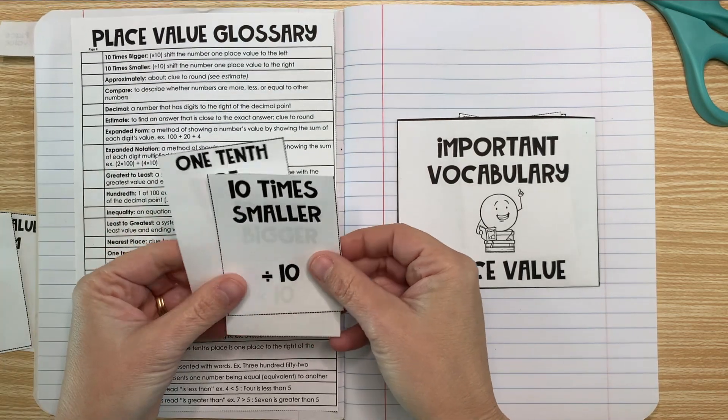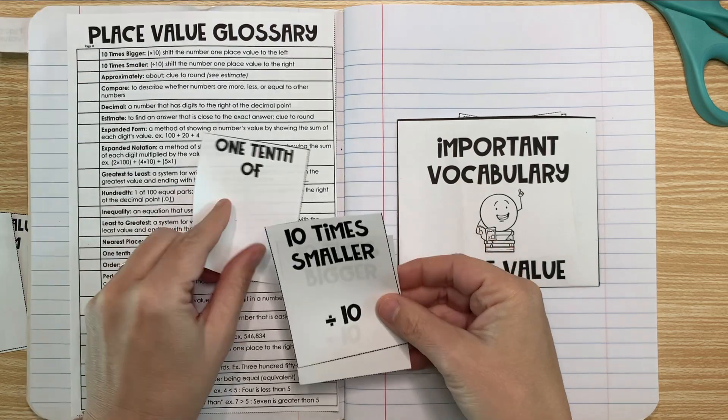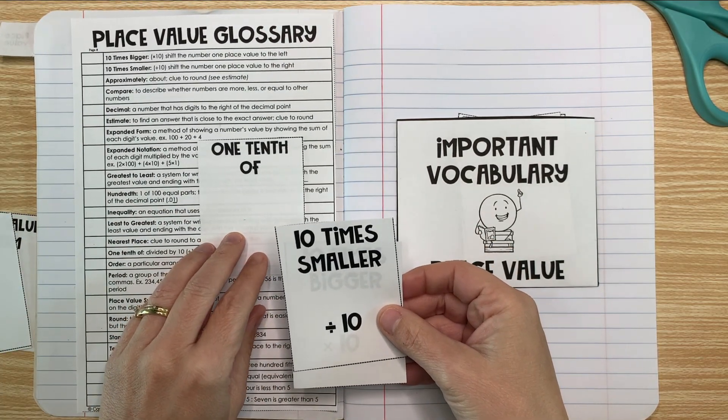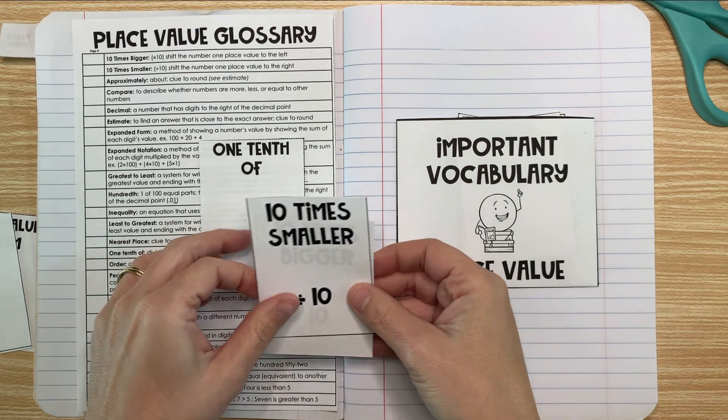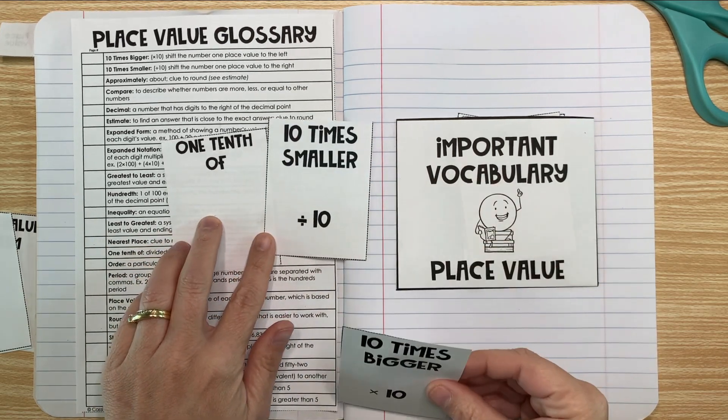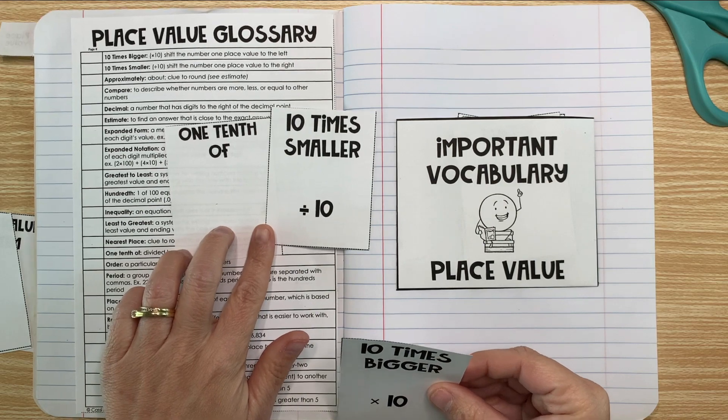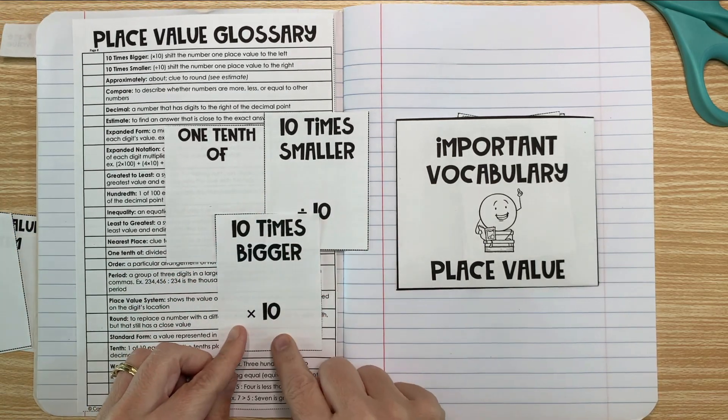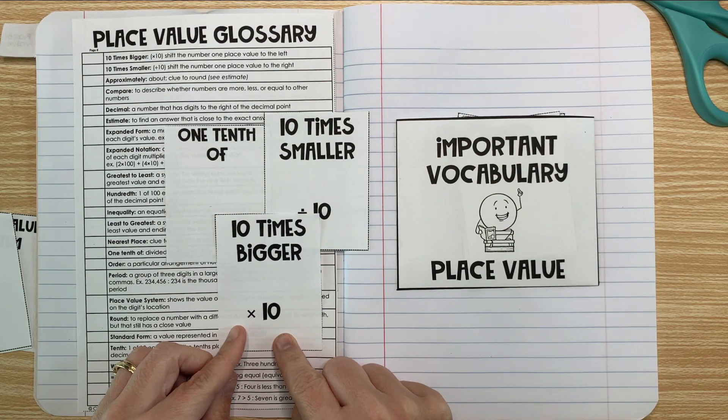We're also going to talk about what it means to be one-tenth of. One-tenth of just means 10 times smaller. And 10 times smaller just means divided by 10. So we're going to look at that. We're going to also look at 10 times bigger, which is times 10.